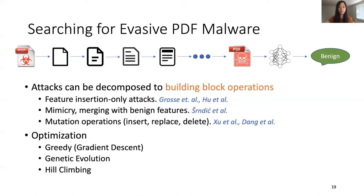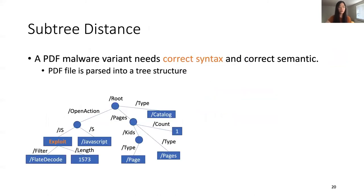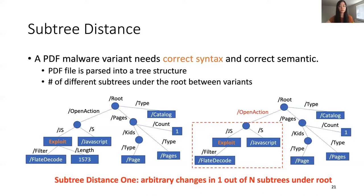Inspired by this, we define our distance metric to capture building block attack operations, where larger distance means more operations are performed. We propose a subtree distance for PDF malware variants. During evasion, a PDF malware variant needs correct syntax and semantics to stay functional, so we focus on the syntax of the PDF tree. The subtree distance captures the number of different subtrees under the root between malware variants. For example, if the malware variant changed only in the subtree /open_action, the subtree distance is 1, capturing arbitrary changes in 1 out of n subtrees under the root.